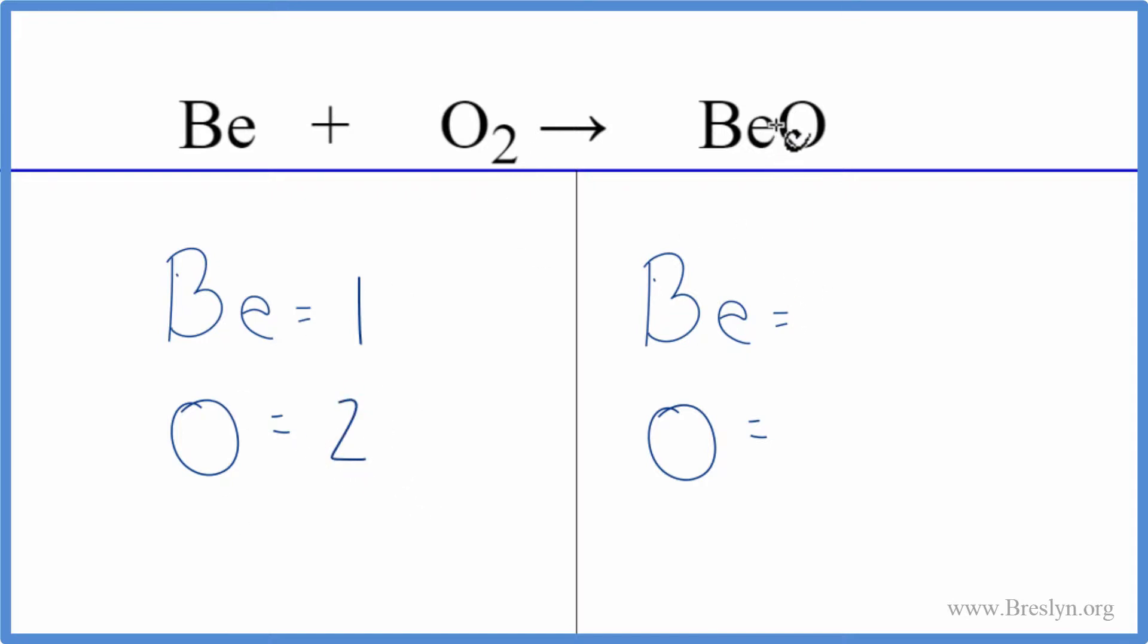On the product side, we have one beryllium and one oxygen atom. So this isn't balanced. The oxygens, they aren't the same.